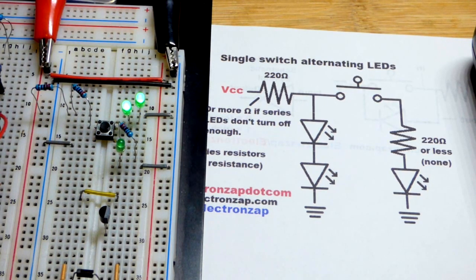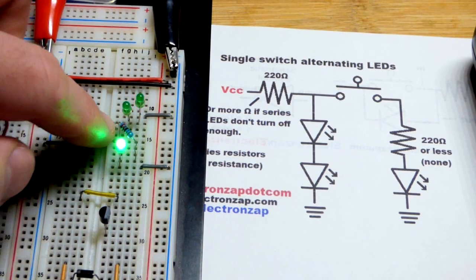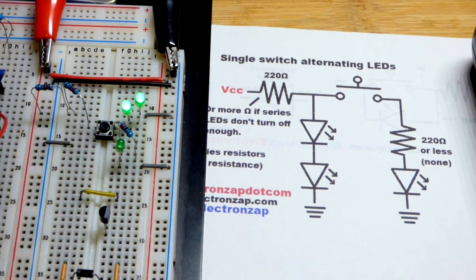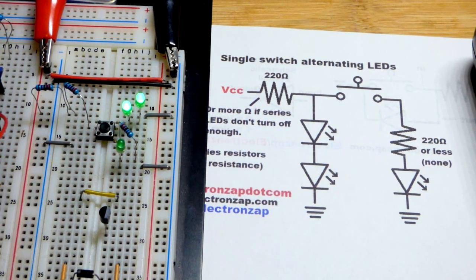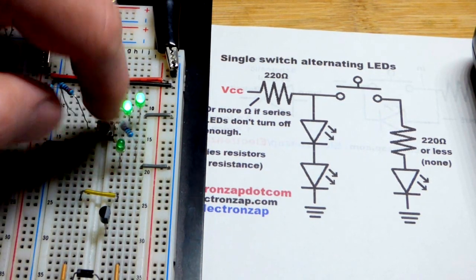And there you go. The green LEDs are actually, there's less current going, but they're just naturally brighter. So, it looks like they will work in this circuit.